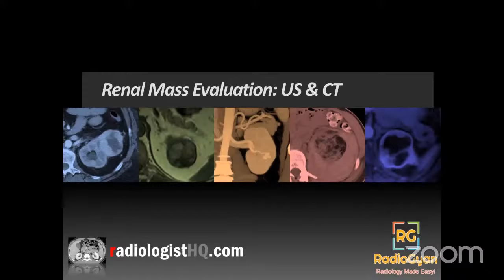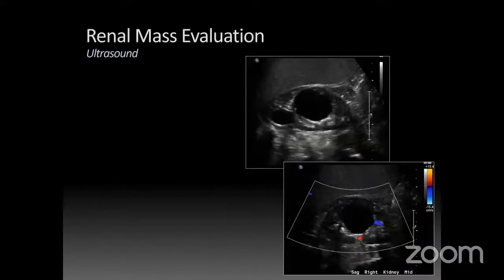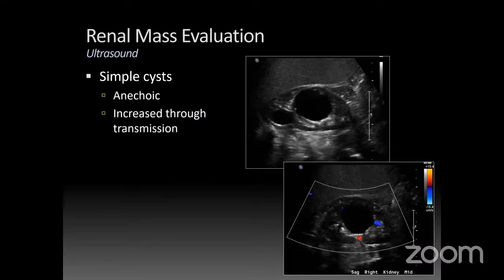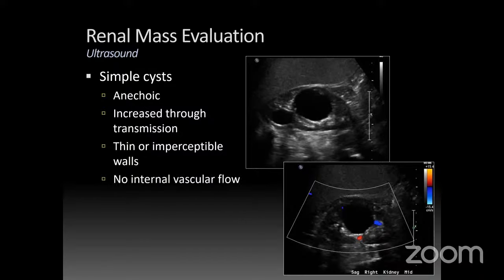For renal mass evaluation, starting with ultrasound and CT. On ultrasound, the most basic lesion is a simple cyst — totally anechoic, meaning black, with posterior acoustic enhancement as the beam hits simple fluid, speeding up and brightening the posterior tissues. The wall should be thin or imperceptible, and when we add color Doppler, there should be no internal vascularity. That's a key thing to add because there are certain mimics that can throw you off.